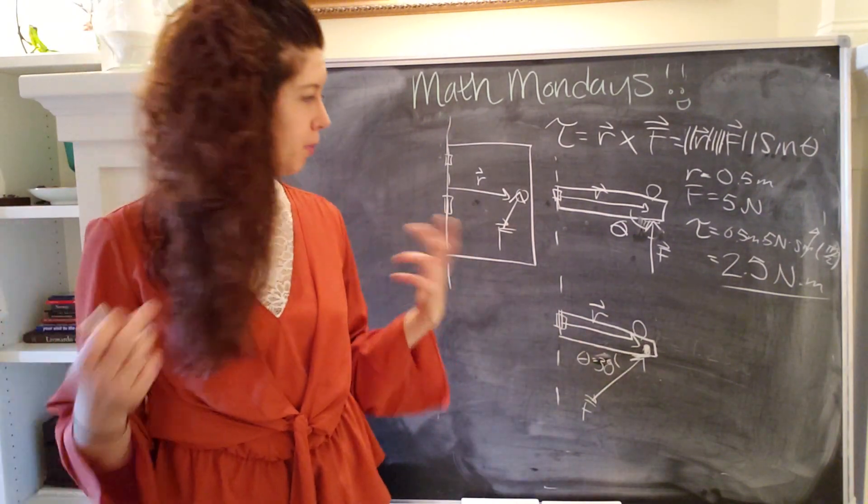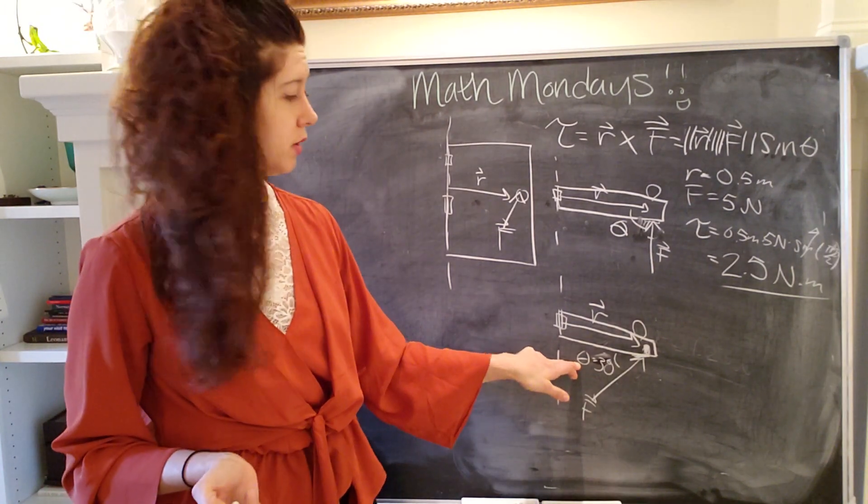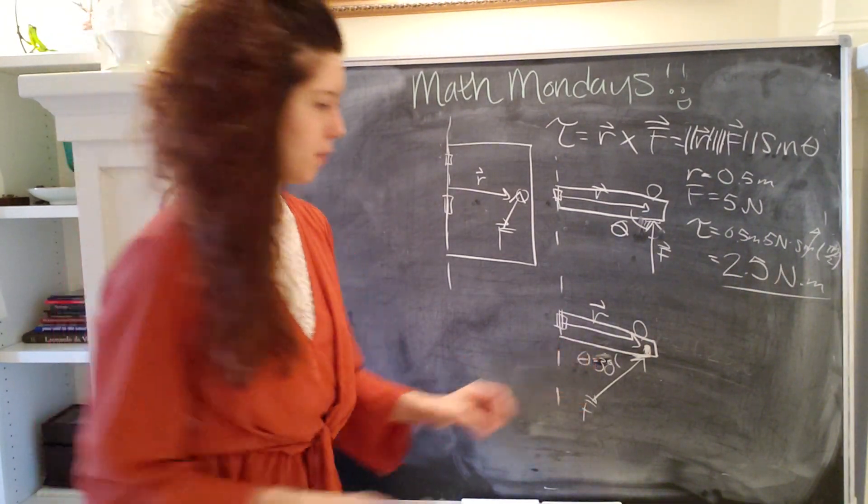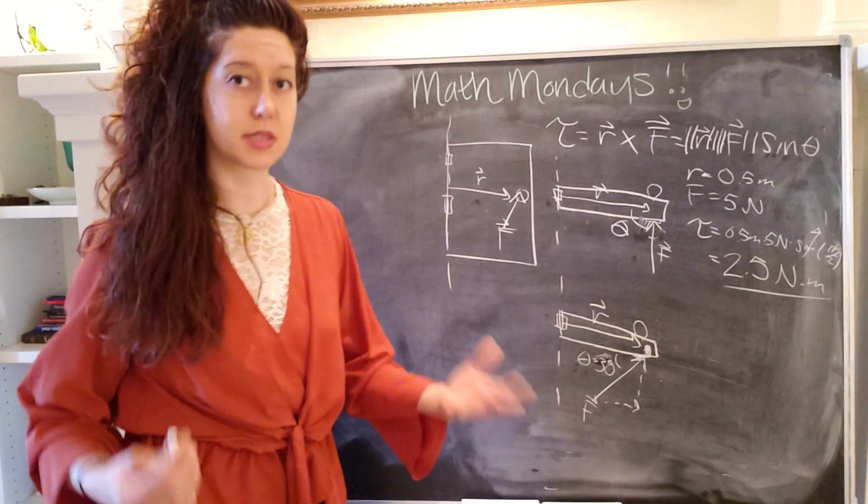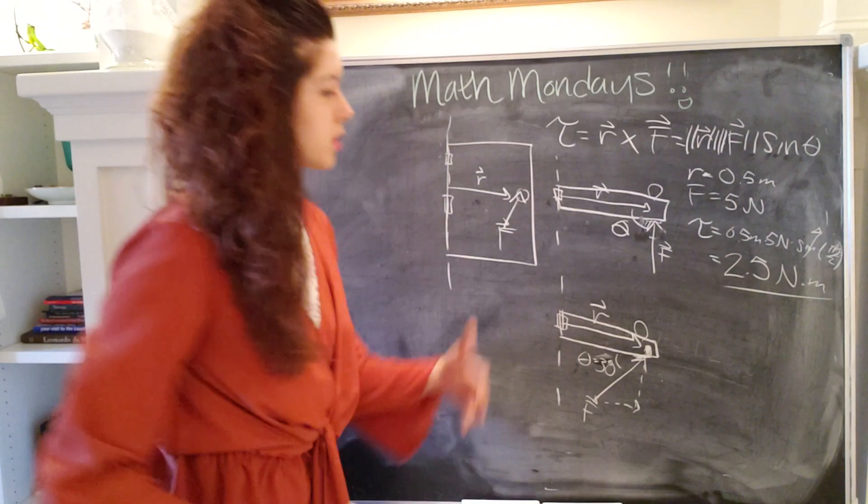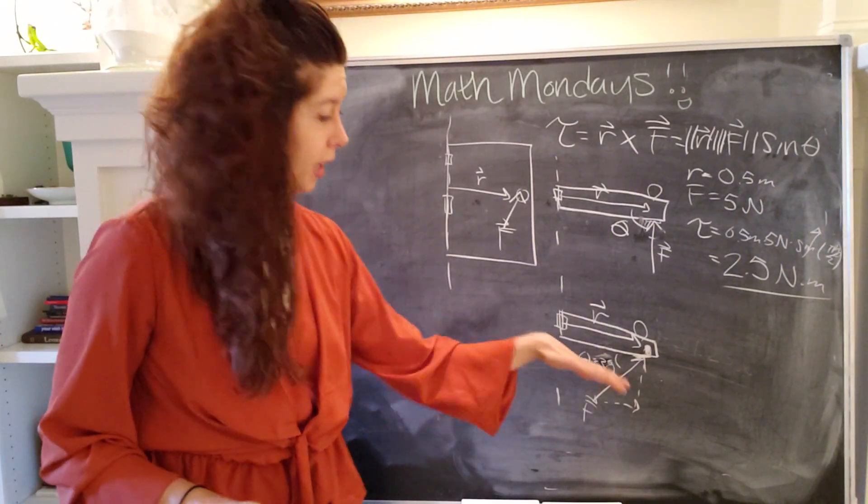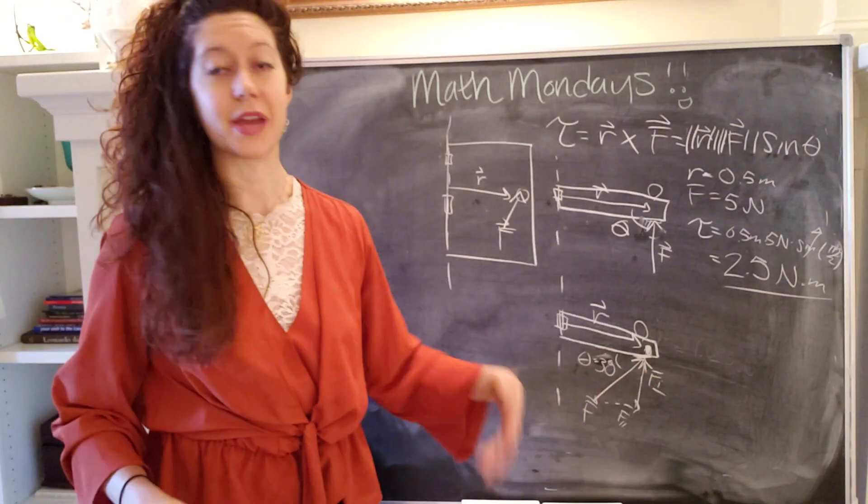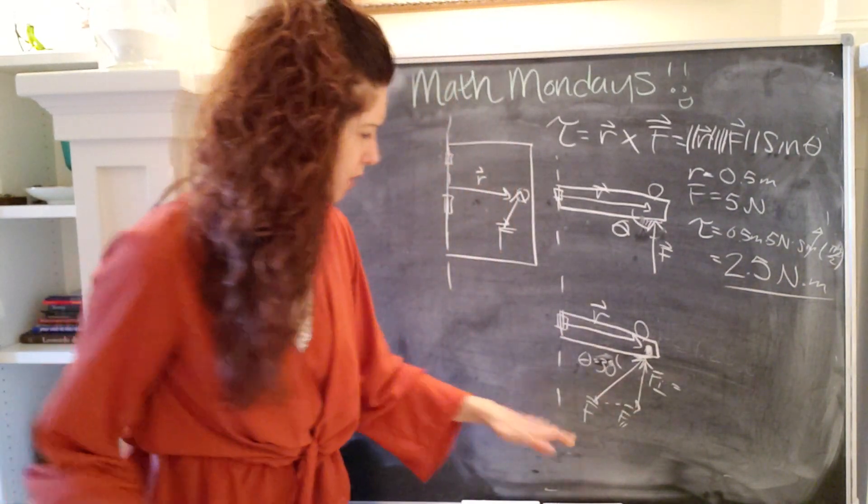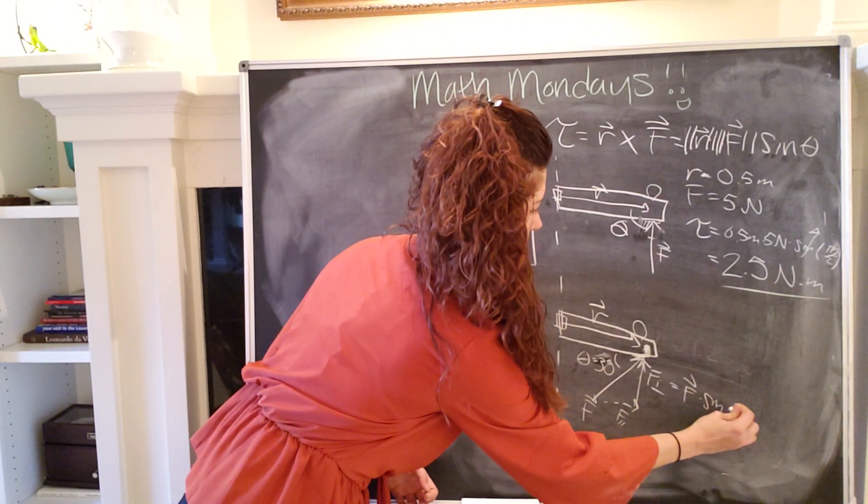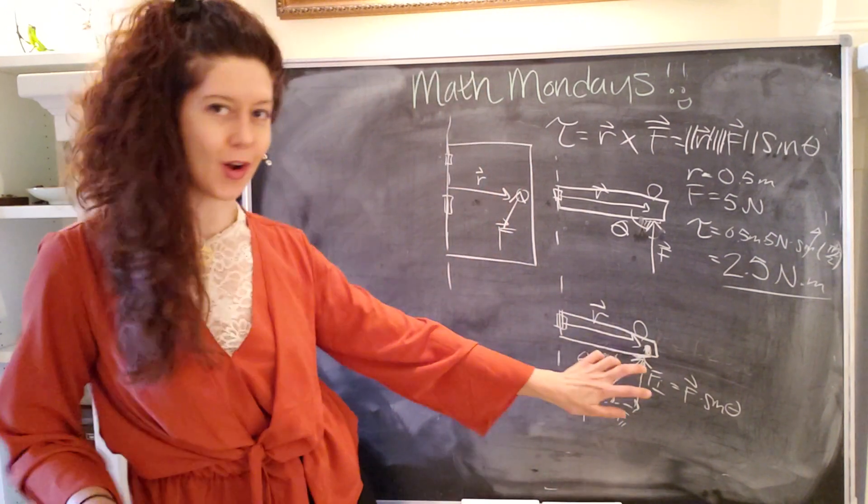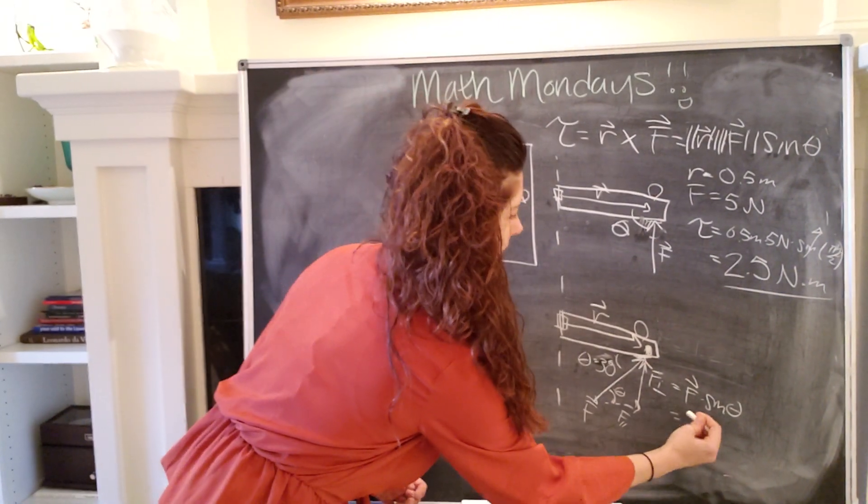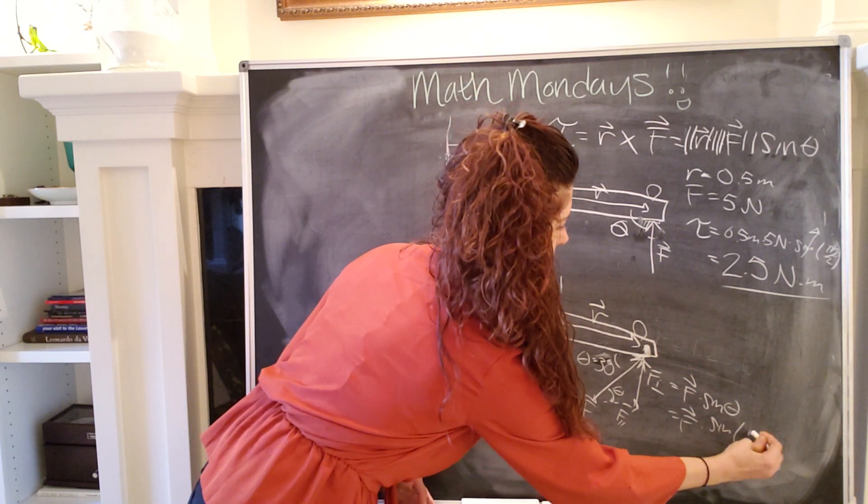And in this case, there's a couple of approaches that we could take. One is to note that this angle is the angle between these two, so we can just plug it into here and we're good to go. The other option I want to show you, if this is not as obvious, is that you can break this force into its constituent parts. In other words, we use the right triangle to figure out the force that is parallel to the door, so we'll call this F parallel, and the force vector that is perpendicular to the door.